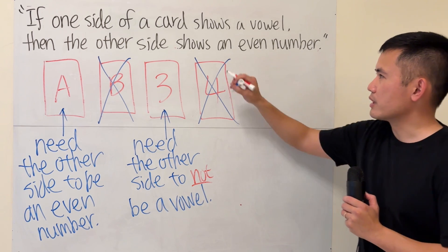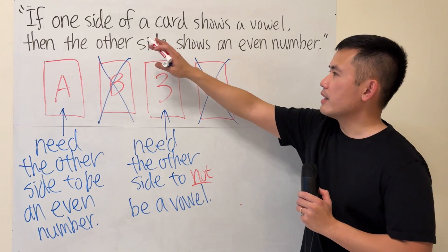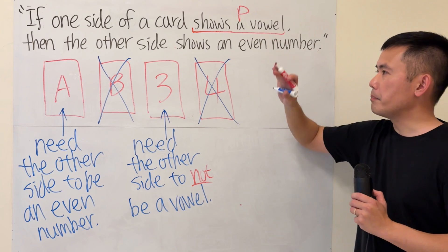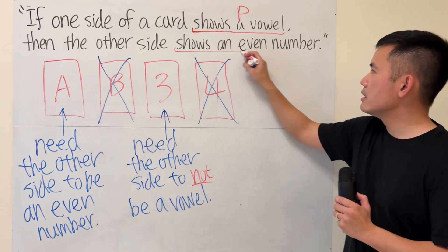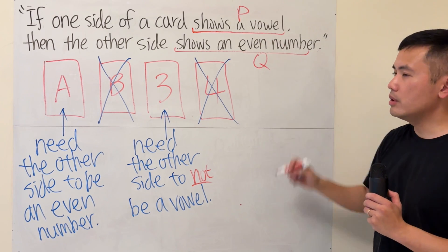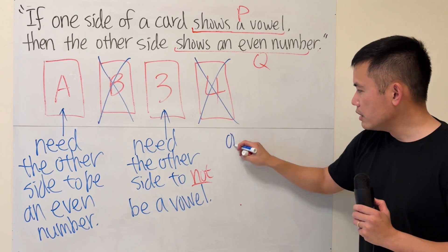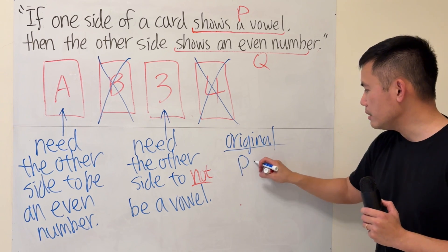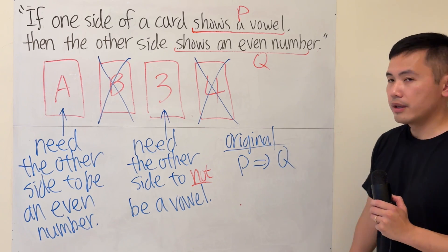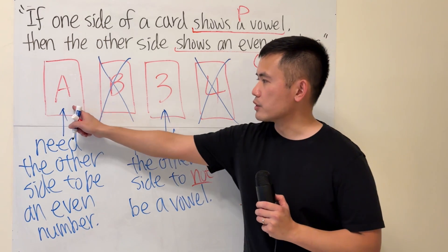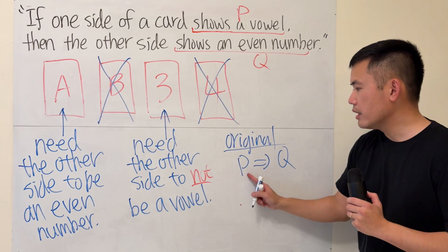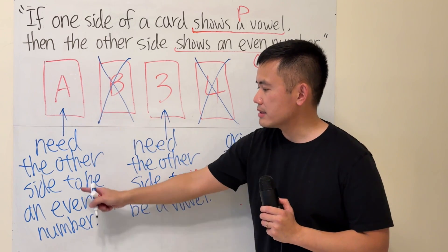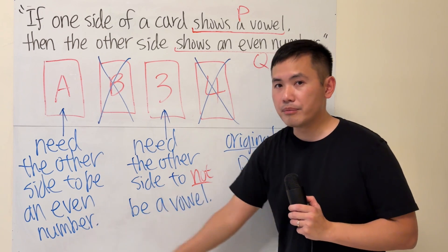Let me just review this with you guys real quick. We can break down the if-then statement and say, let's say this part is the statement P, and then this right here is the statement Q. So originally, our if-then statement shows we have P implying Q. So that's the case for the first one. We have P, then we must have Q. We have a vowel, so we must have the other side to be an even number.